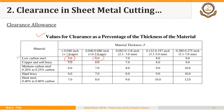For example, if we have hard brass with a thickness of 0.150 inches, that falls in a certain range in the table, and the clearance will be nine percent of that thickness.